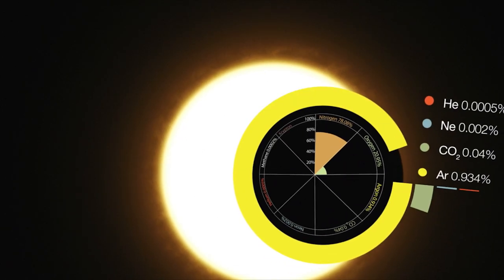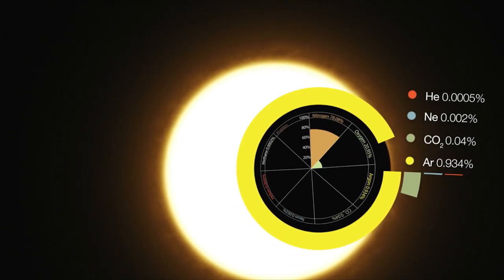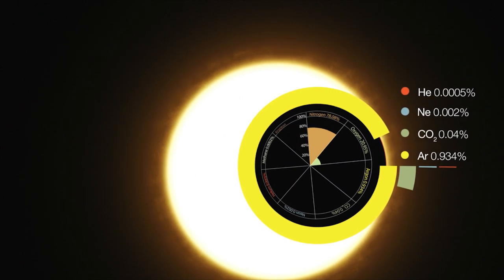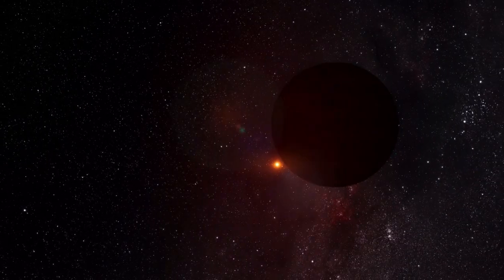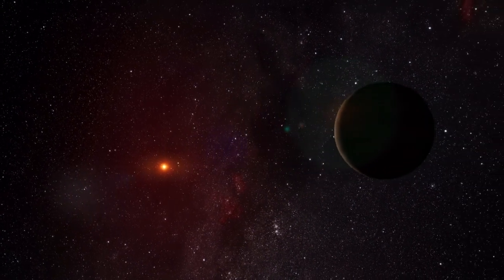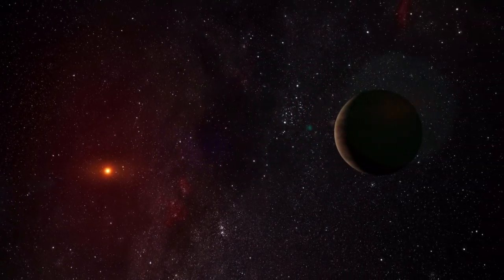But even the strongest lines of the most abundant elements are incredibly weak and hard to detect. Only a tiny fraction of the star's light is interfering with the atmosphere of the exoplanet.